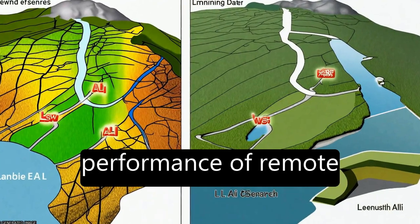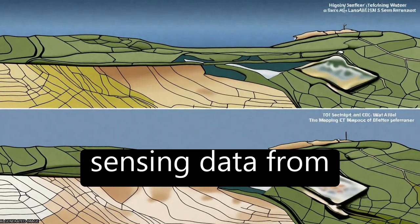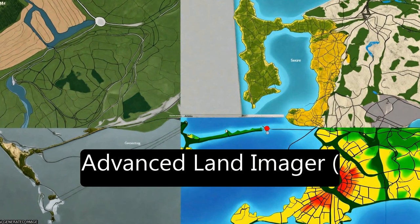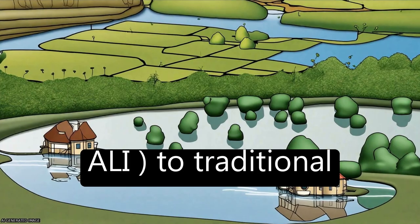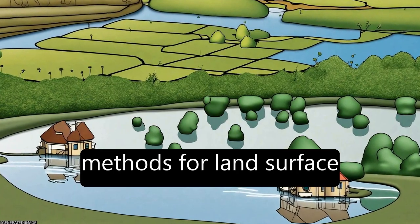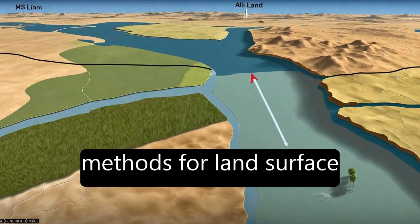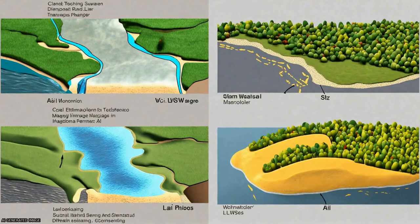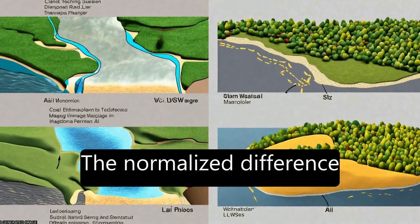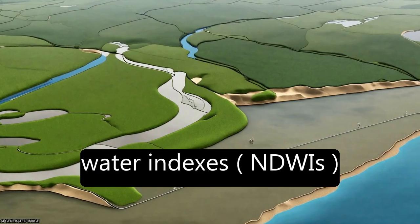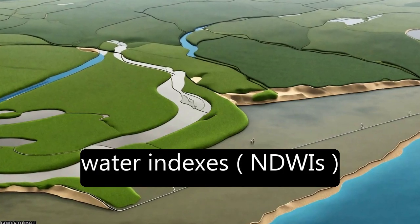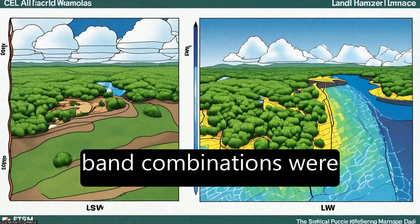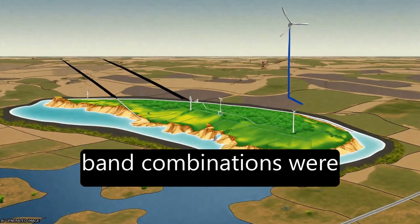This study compares the performance of remote sensing data from Advanced Land Imager, ALI, to traditional methods for land surface water, LSW, mapping. The normalized difference water indexes, NDWIs, calculated from various band combinations, were used to map LSW.